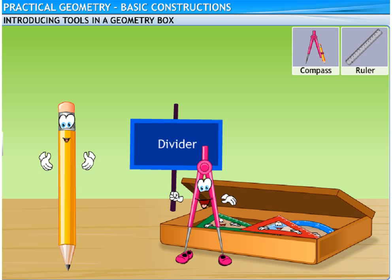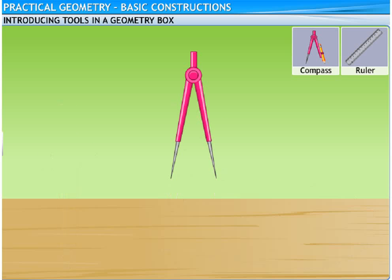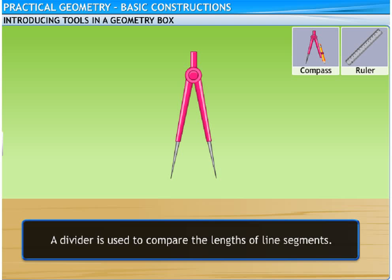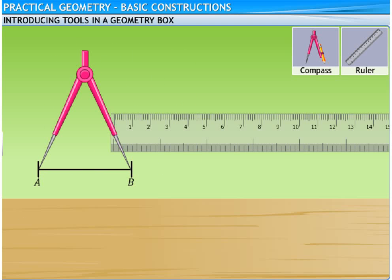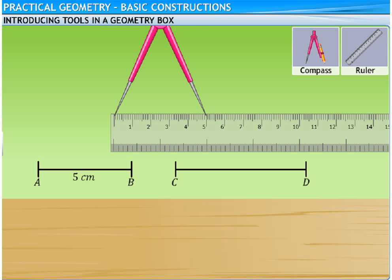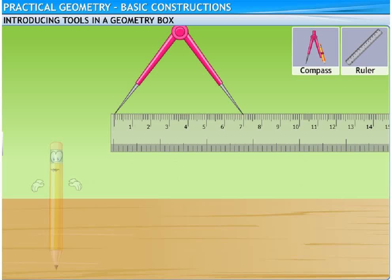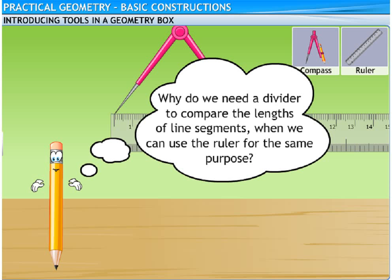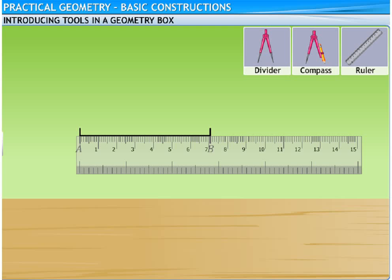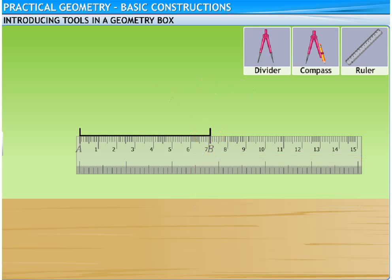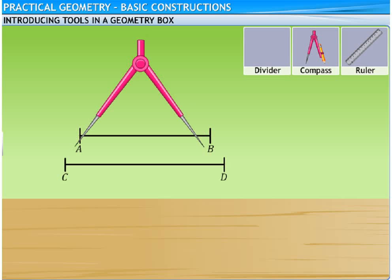The divider is yet another important tool in your geometry box. It is similar to a compass, but it has a pair of pointer ends. It is used to compare the lengths of line segments. Why do we need a divider when we can use the ruler for the same purpose? We can compare lengths with a ruler; however, comparing lengths with a ruler may not give exact readings. This type of error is called a positioning error. Thus, to avoid these errors, it is advised to use a divider.